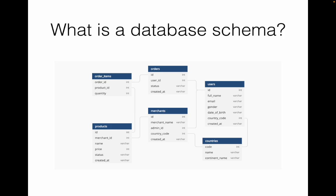A database schema is really a logical blueprint of what exists — it does not hold any physical data. When people talk about exporting the schema, they mean getting the different tables and the relationships between those tables; we are not exporting any actual data. So a database schema defines what entities are available and how they are related to each other.